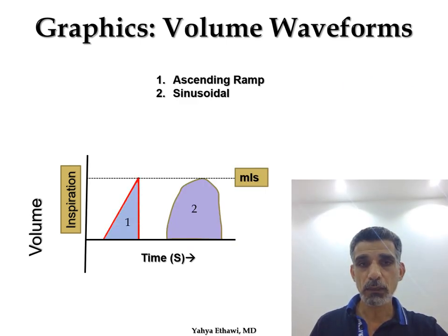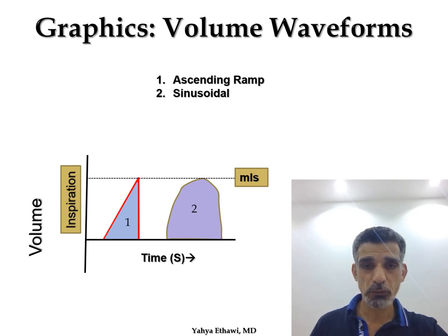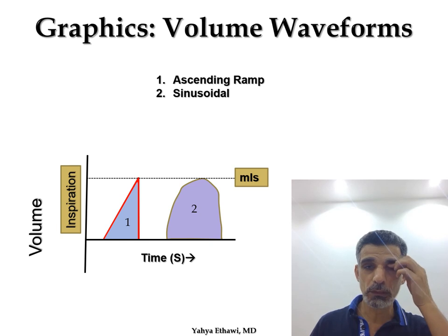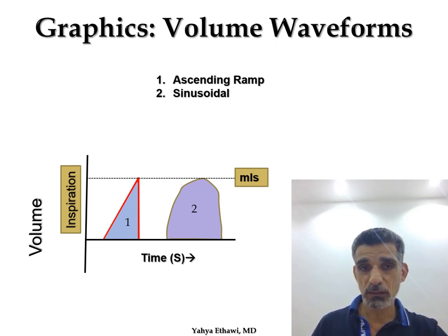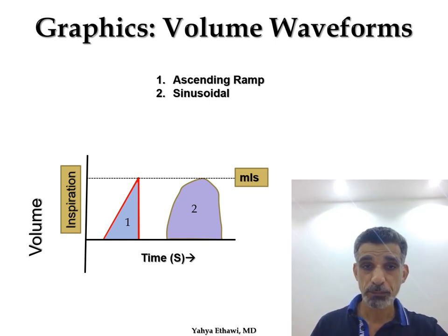Looking at volume waveforms: the first type is ascending round — tidal volume builds slowly, using very low flow, then the inspiratory time ends and volume drops quickly. The second type, using very high flow, achieves a different shape and is likely an adjunct type of ventilation — probably a hybrid mode.